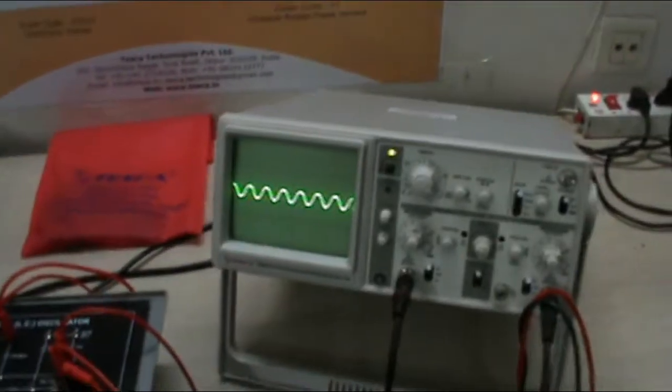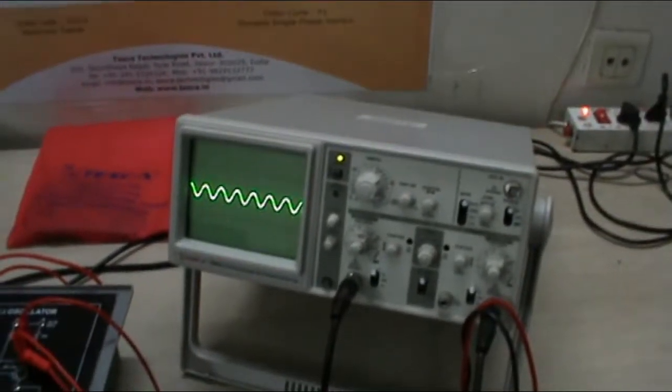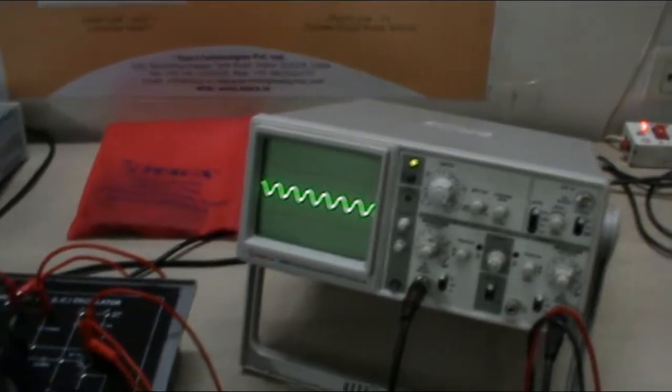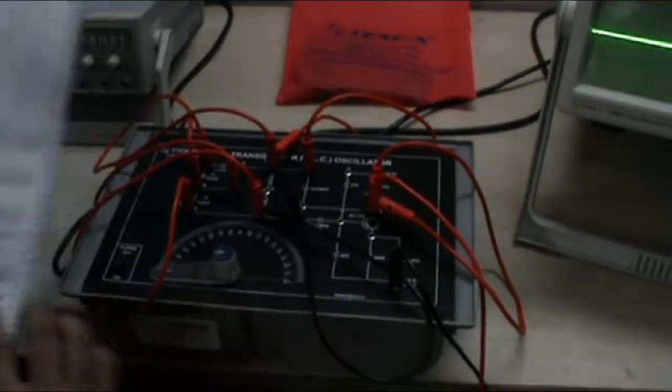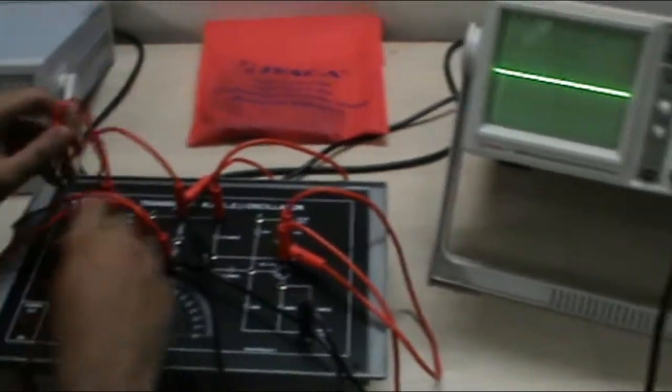And we can vary the frequency and measure the frequency on the oscilloscope, or you can use the external frequency measurement box to measure the frequency. This is the working of Colpits oscillator. Now Clapp oscillator.